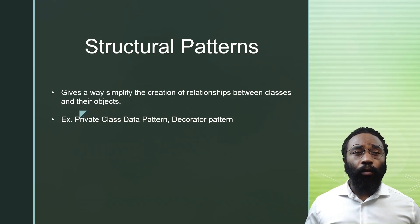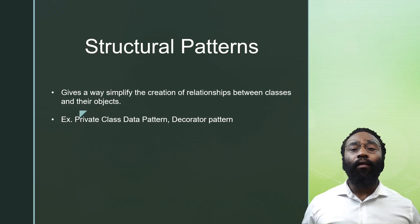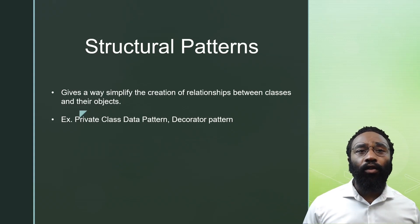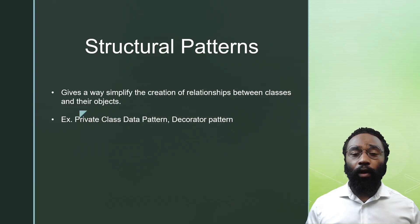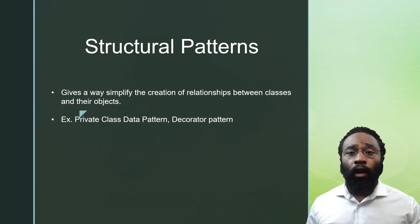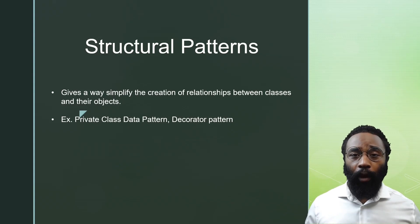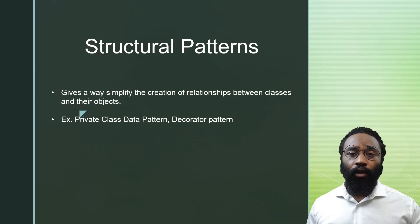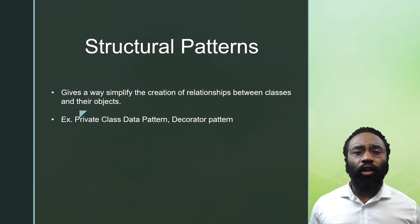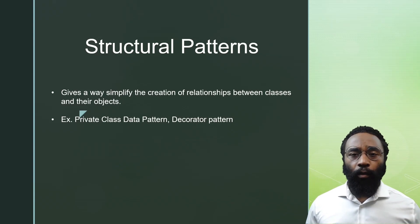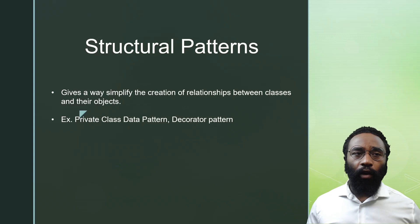With a structural pattern, what we're looking at is a way to structure the code. You have a certain problem, a certain data set, a certain aspect of your code that needs to be implemented a certain way. You can look at design patterns and say, 'I don't want anybody to be able to touch this certain variable — if somebody touches it, it's going to ruin the whole program.' We're going to look at an example with the private class data pattern.